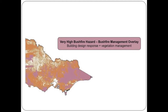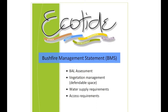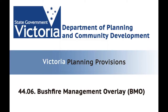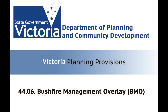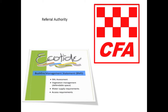If your property is within the highest bushfire category, which is a BMO area, you will require a bushfire management statement, or BMS. A BMS is a relatively complex report and it is a mandatory requirement to meet the Victorian planning provisions. These reports are sent to referral authorities, such as the CFA, for approval in the planning process.